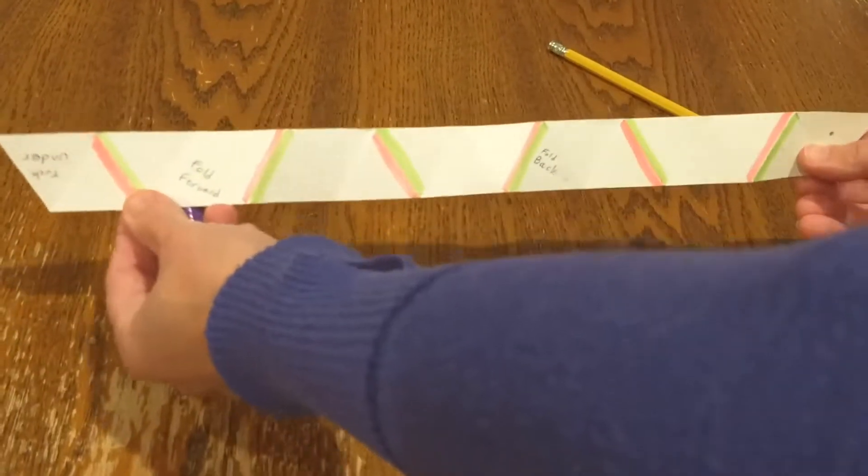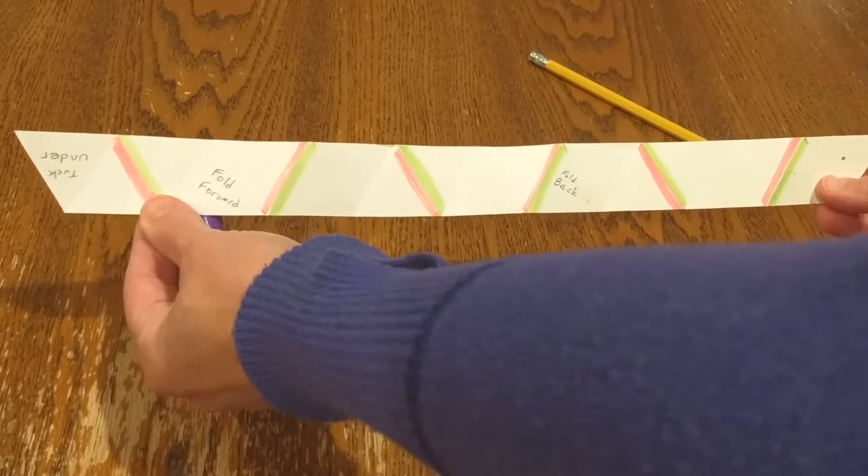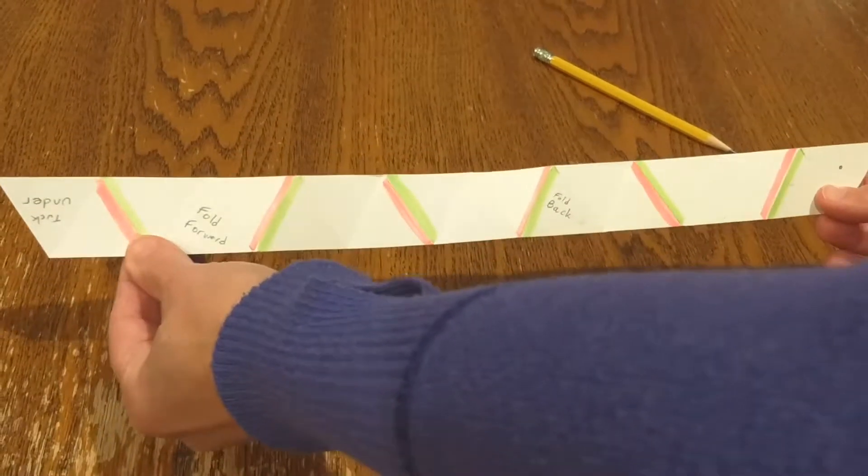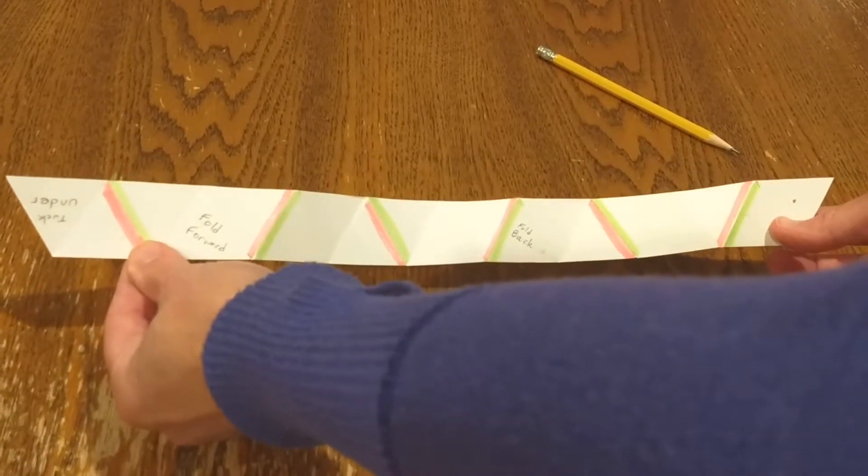To make a hexahexaflexagon, you start out with the same type of paper that you began with the regular hexaflexagon, but instead of having only 10 triangles, now we have 19.